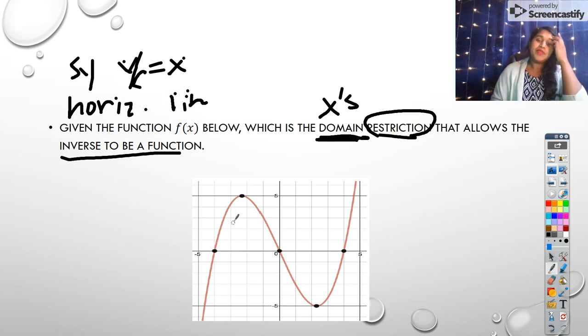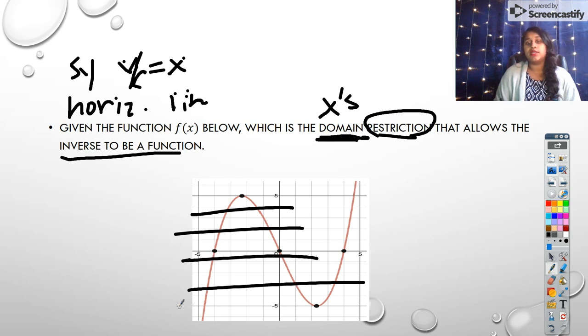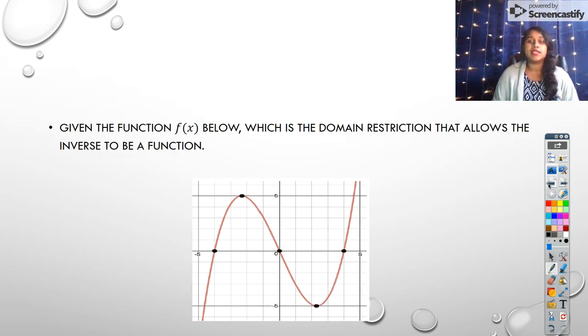The horizontal line test tells me if I can run my lines across and I only hit one time, then I can create an inverse. But as you can clearly see, as I run those lines across, I'm hitting more than one point, which means it's not an inverse. But where on my domain could I draw where I would only hit an inverse? Well, this line right here, from here to here,